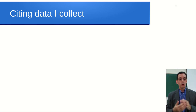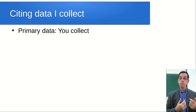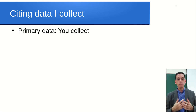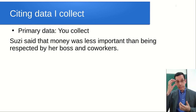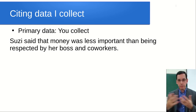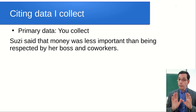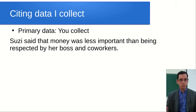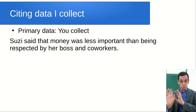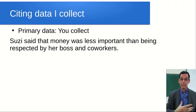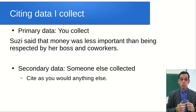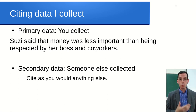How do you cite data that you collect yourself? That's called primary data. If you had an interview with a business leader and want to reference what they said - a very common thing researchers do - you might say 'Susie said money was less important than being respected by your boss or coworkers.' You'll notice there are no parentheses and nothing will appear on your reference page, because you're not referencing somebody else's literature - you are citing your own collected data. Secondary data, where you're getting information from literature, is cited like anything else - whether it's secondary data, a quote, or a definition.